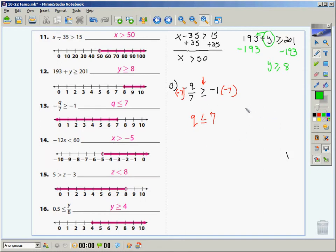Number 14 says negative 12x is less than 60. X is being multiplied by a negative 12, so I have to divide both sides by a negative 12. If I'm dividing by a negative, my inequality has to be flipped. And negative 12 into 60 is going to be a negative 5. Open circle on negative 5. It's getting bigger, so it's going to the right.